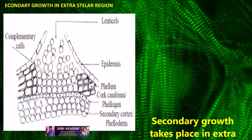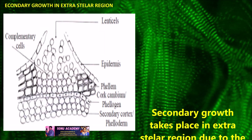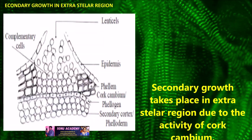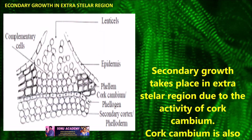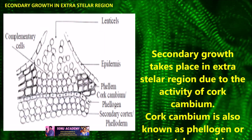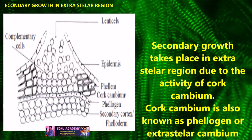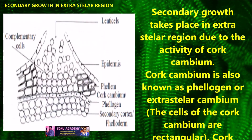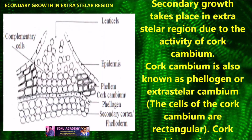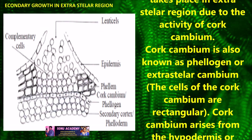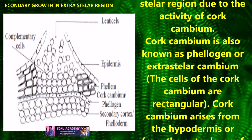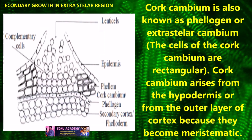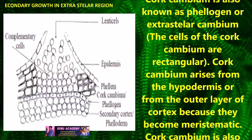Secondary growth in the extrastele region takes place due to the activity of cork cambium. The cork cambium is also known as phellogen and extrastele cambium. The cells of the cork cambium are rectangular. The cork cambium arises from the hypodermis or from the outer layer of the cortex because they become meristematic.